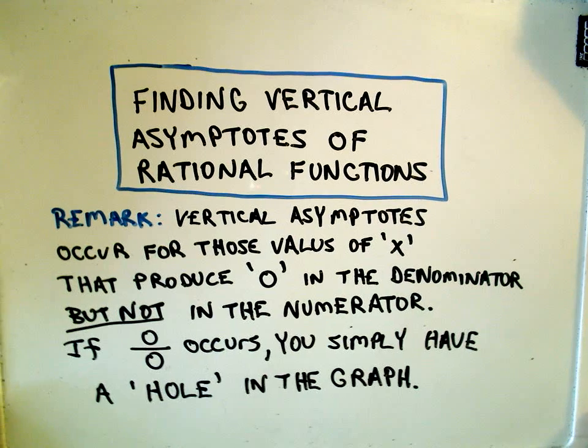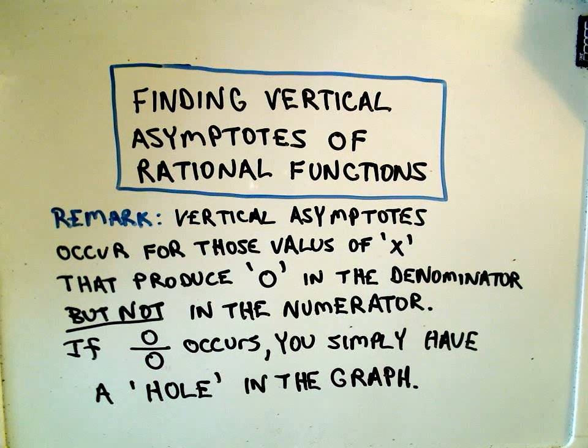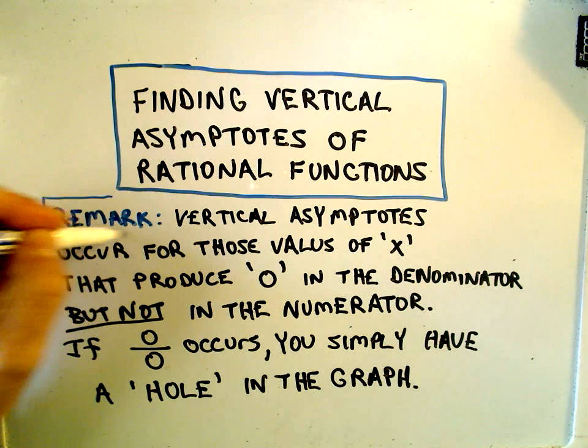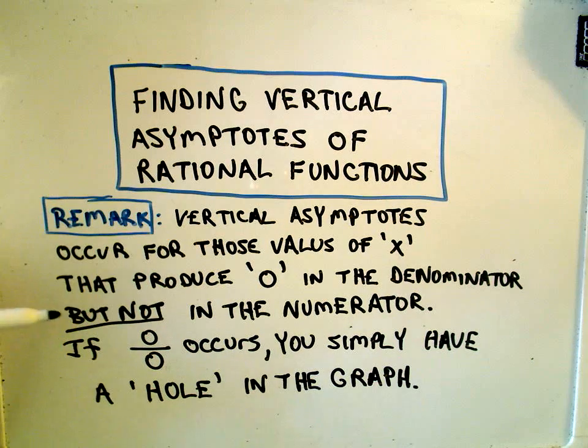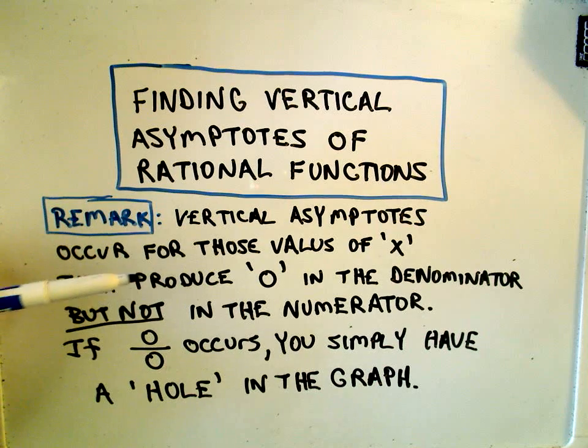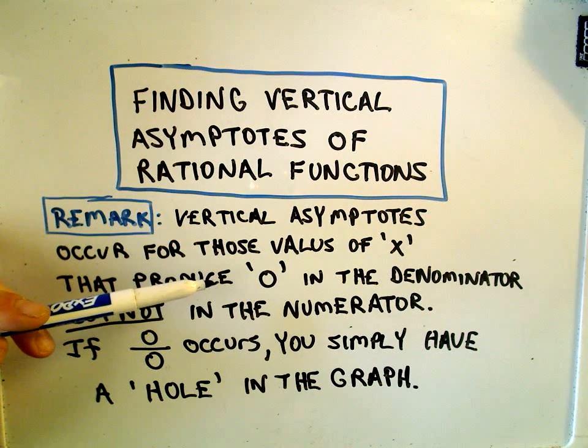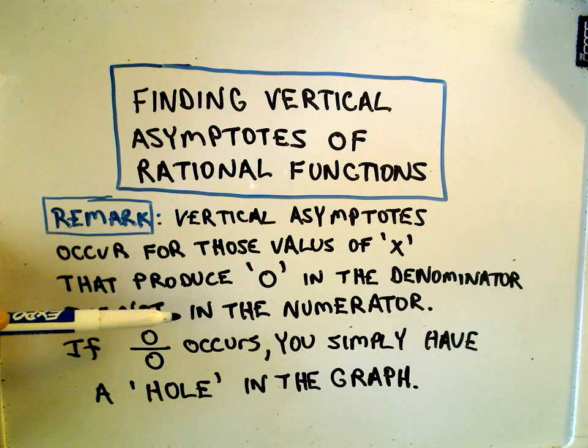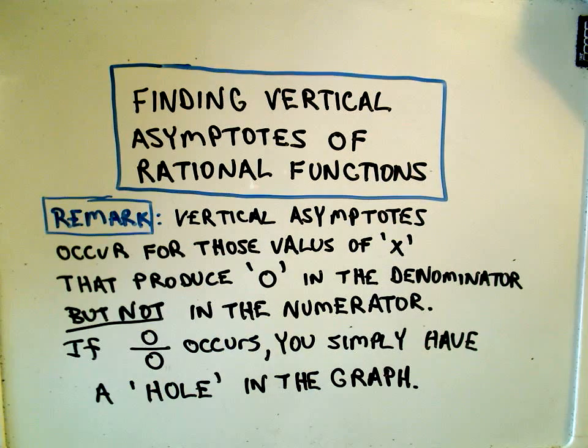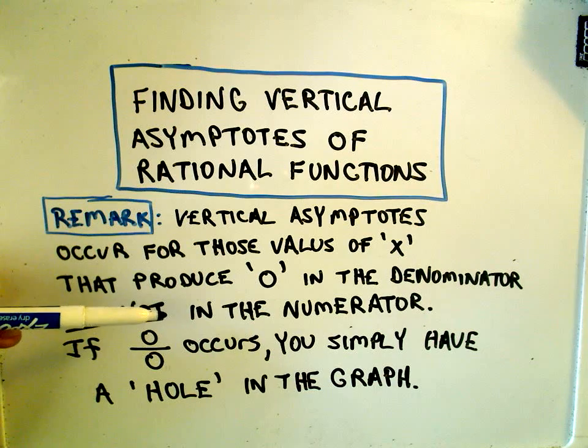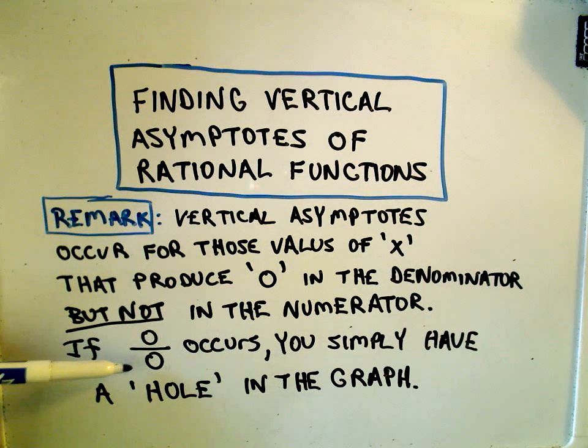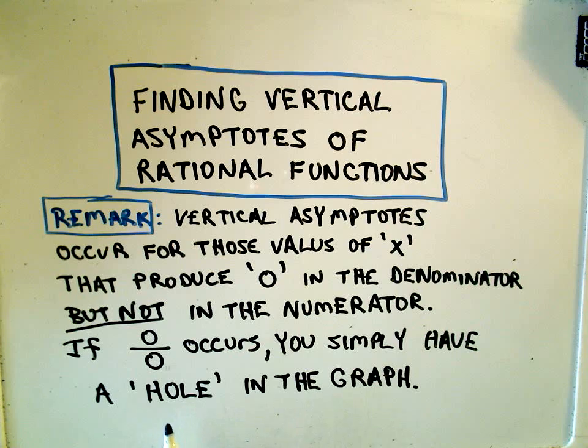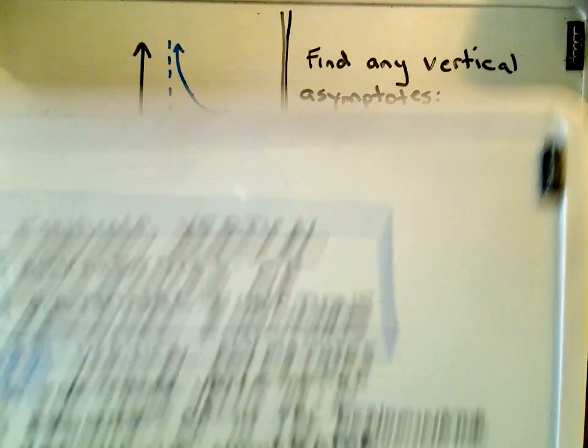Okay, in this video I want to talk about finding vertical asymptotes of rational functions. The thing you need to remember about vertical asymptotes to find them, you're basically trying to figure out what values of x give you zero in the denominator of the fraction of your rational function, but you don't want zero to occur in the numerator. If you do get zero over zero, it just means you have a hole in the graph. So there is a discontinuity there, but it's not going to be one of these infinite discontinuities.